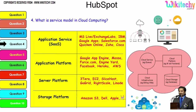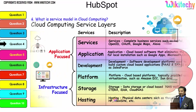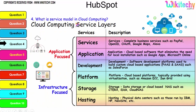Digging further into the service model: application services, application platform, and server platform are key layers, with storage platform provided by Amazon S3, Dell, and Apple. The important service layers are: services, application development, platform, storage, and hosting. These are typical examples for each category, and these are important services that will be asked about in cloud computing interviews.